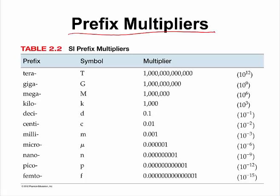Tera, which means 10 to the power of 12, or one with 12 zeros behind it, is one of the units that is very common in the computer world. For example, if you buy a new computer, they may tell you that the hard drive is 2 terabytes.